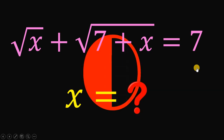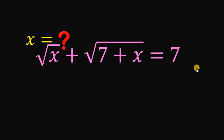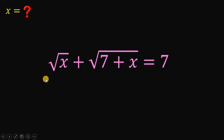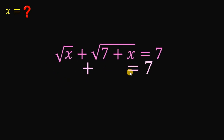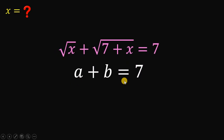Now let's answer this question together. We have the equation: square root of x plus square root of 7 plus x equals 7. There are a lot of ways to answer this kind of question, but in this video we will do it differently. We will let square root of x be equal to a, and square root of 7 plus x be equal to b. So we have a plus b equals 7.